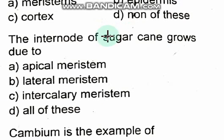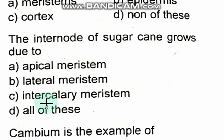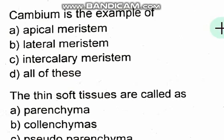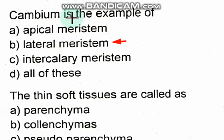The internodes of sugarcane grow due to intercalary meristem — option C is correct. Cambium is an example of lateral meristem.